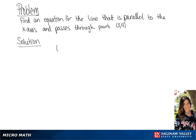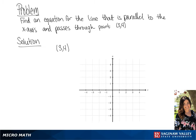We're looking for the line that is parallel to the x-axis and passes through point (3, 4). So we're going to graph that point first, and then draw a horizontal line through that point, because the line parallel to the x-axis is also horizontal.